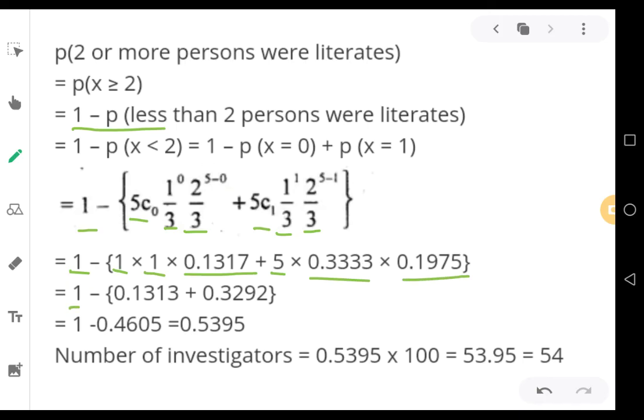And 1 minus multiply 1 into 1 into 0.1317, you will get 0.1317 only. Then plus 5 into 0.33 into 0.1975, if you multiply all the 3 digits, you will get 0.3292. And the next step you add this. So that 1 minus 0.4605, and subtract this from 1, you will be getting 0.5395.